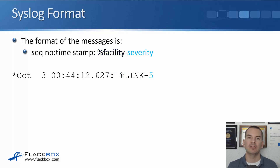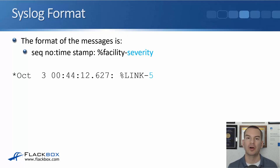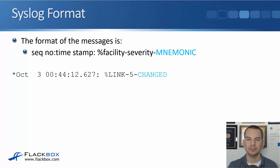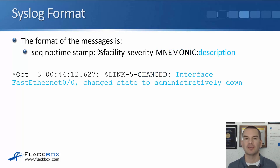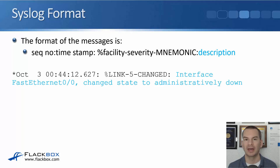The next thing is the severity level, which we'll cover in more detail shortly. There are eight different severity levels going from zero through to seven with zero being the most severe. In our example the severity level of this event is severity 5. Next is a mnemonic, which is a short description of what happened — here we can see that a link has changed. The last thing in the Syslog message is a more detailed description. In our example the description is that interface FastEthernet 0/0 changed its state to administratively down, meaning somebody typed shutdown on that interface.